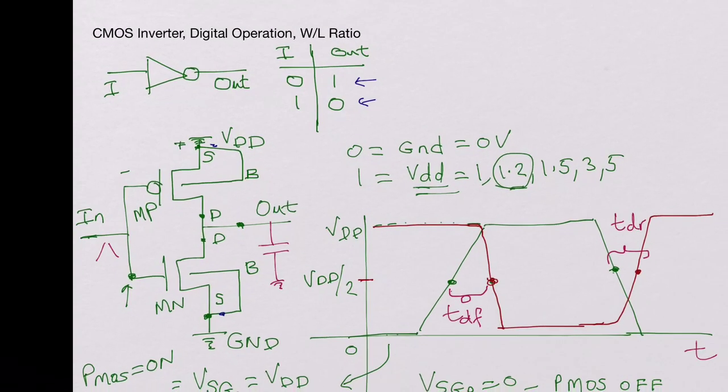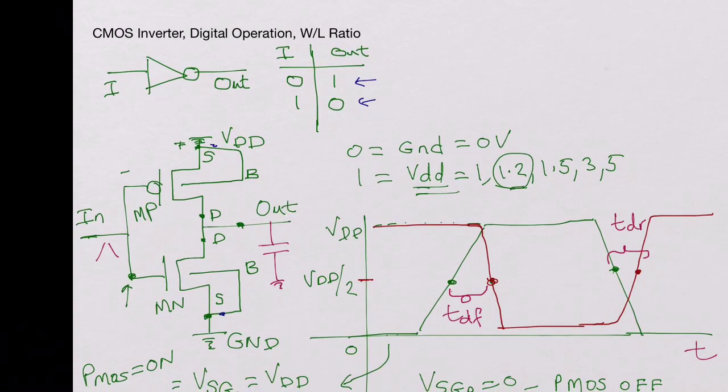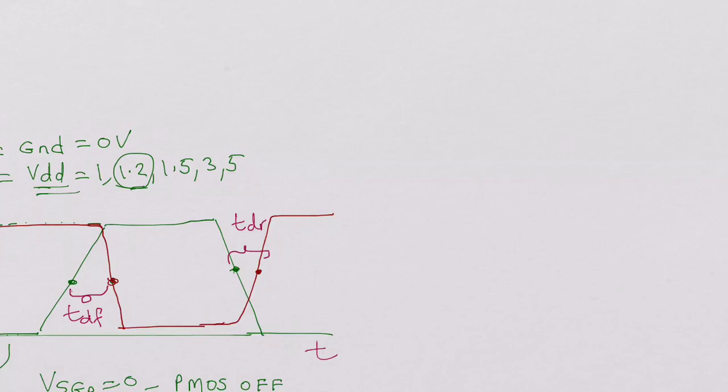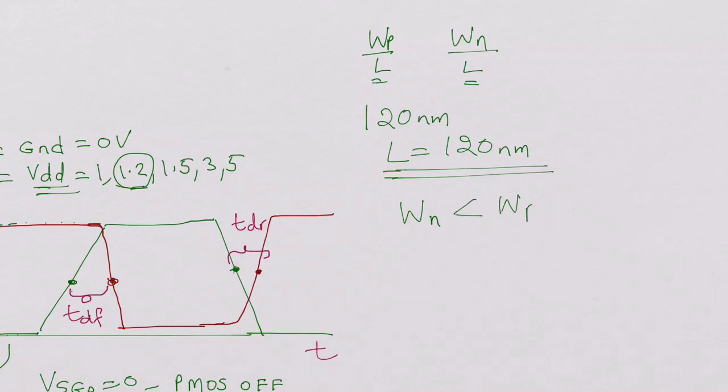And now, like I think I have mentioned in one of my videos, if you look at the W by L ratios now. Now the larger the W by L ratios are. So now, say W by L ratio, WP by L and WN by L. So why I said the L is common is because usually for any technology, say you take a 120 nanometer technology. For example, L would be 120 nanometers. That is for in the entire digital library, all the cells would have an L of 120 nanometers. But the W and WP and WN can vary.